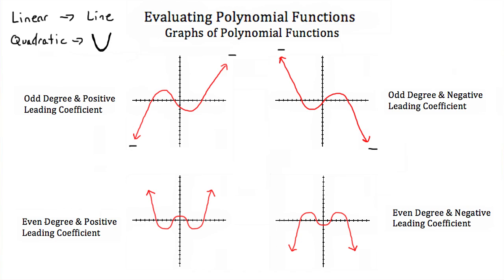Now if we have an even degree — a fourth power or sixth power — and a positive leading coefficient, we have a kind of U shape but with a squiggly in the middle. Because it's a positive leading coefficient, we start high and we end high.